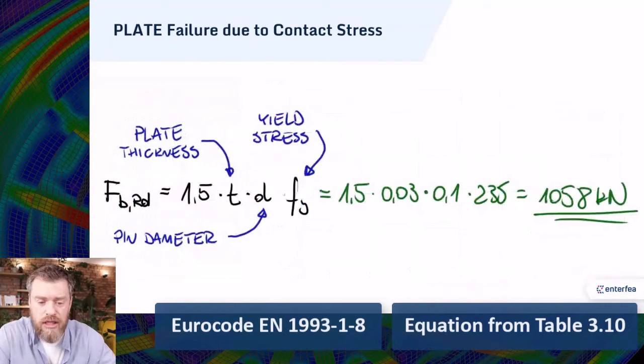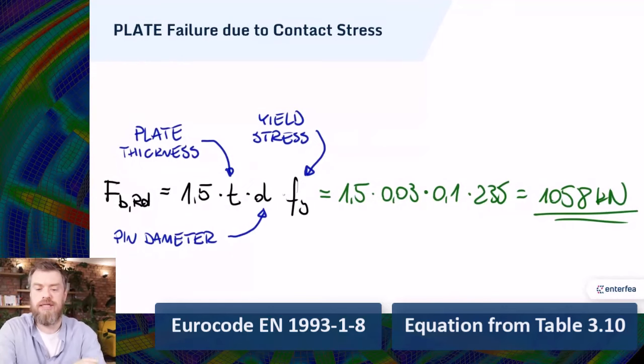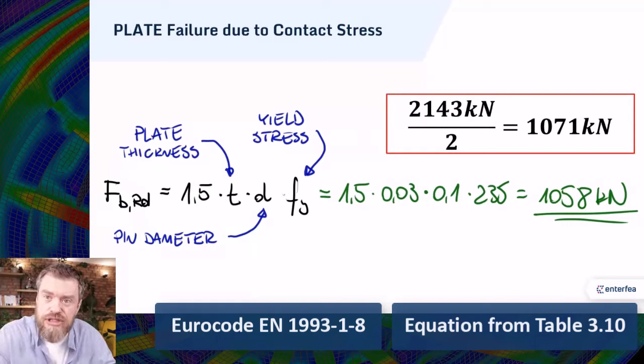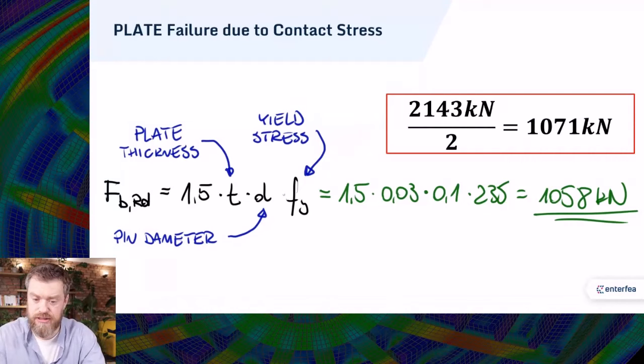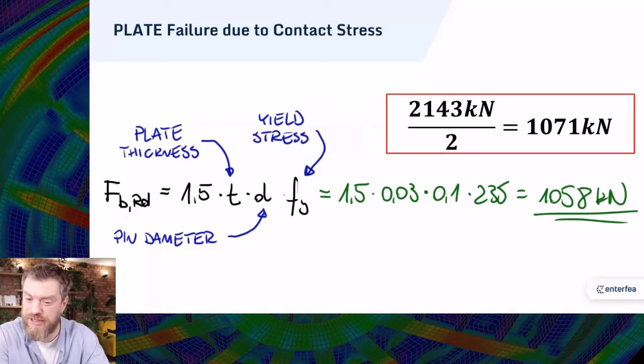And as you can see, again, the Eurocode procedure to calculate the capacity is very simple. And again, this agrees with FEA outcome very accurately. So, so far, it was pretty simple. Now it will get a bit more complicated.